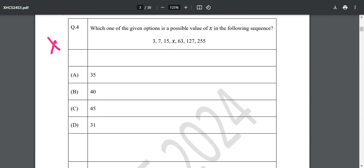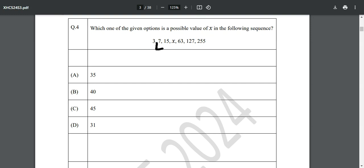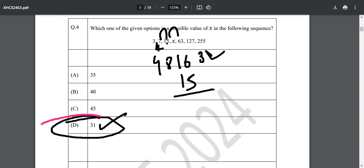Which one of the given options is a possible value of x in the following sequence? You just need to apply common sense - what are the differences? 3 to 7 is a difference of 4, 7 to 15 is a difference of 8. Pretty obvious that the next difference will be 16 and then 32 like this. You can check: 15 plus 16 will be 31, and it will be the correct answer. You can also check: 31 plus 32 is 63. So the correct answer is D, 31.